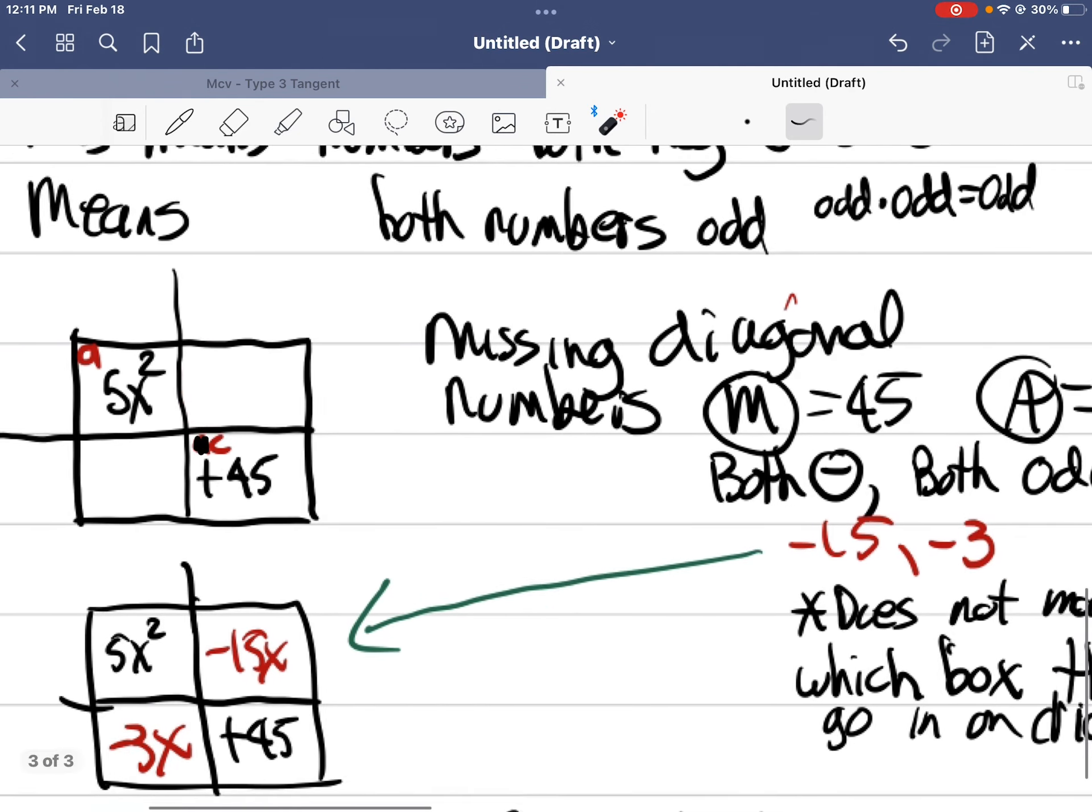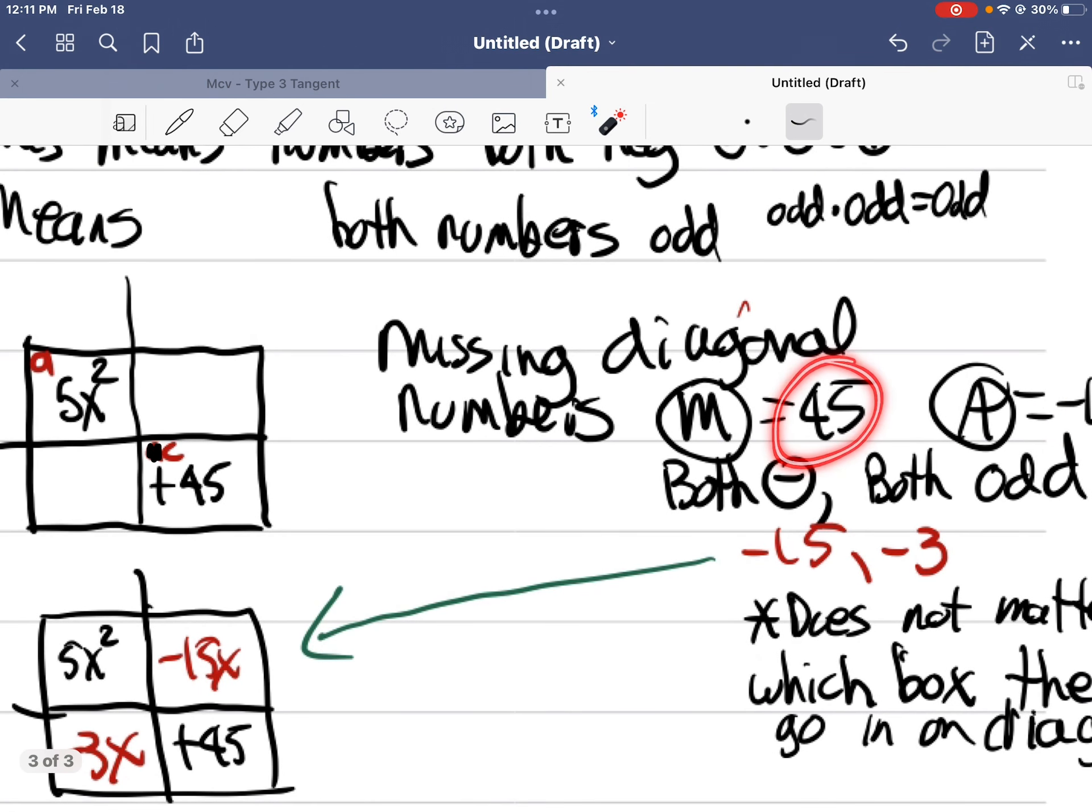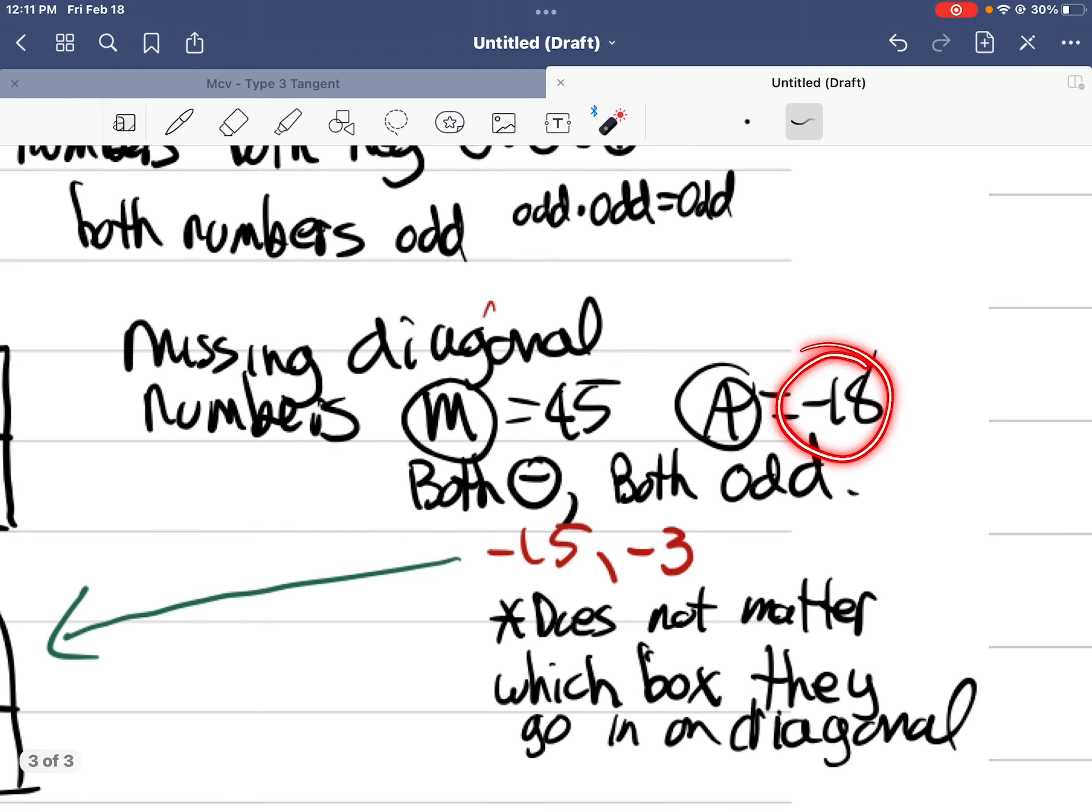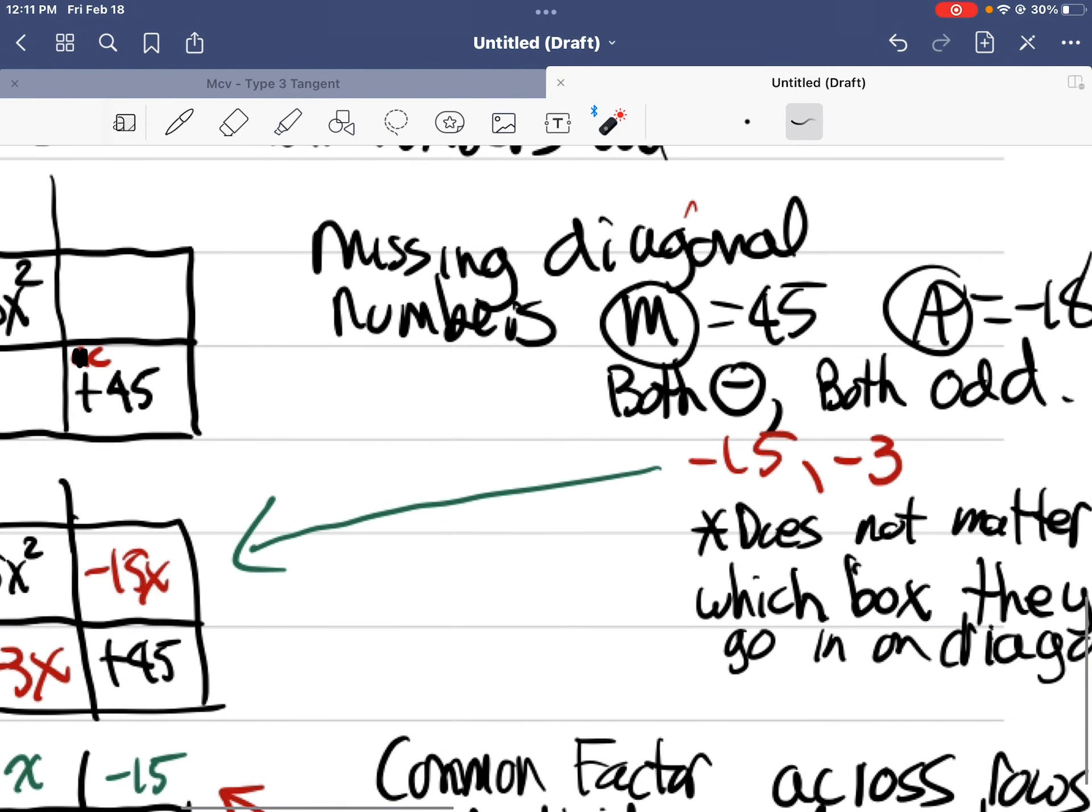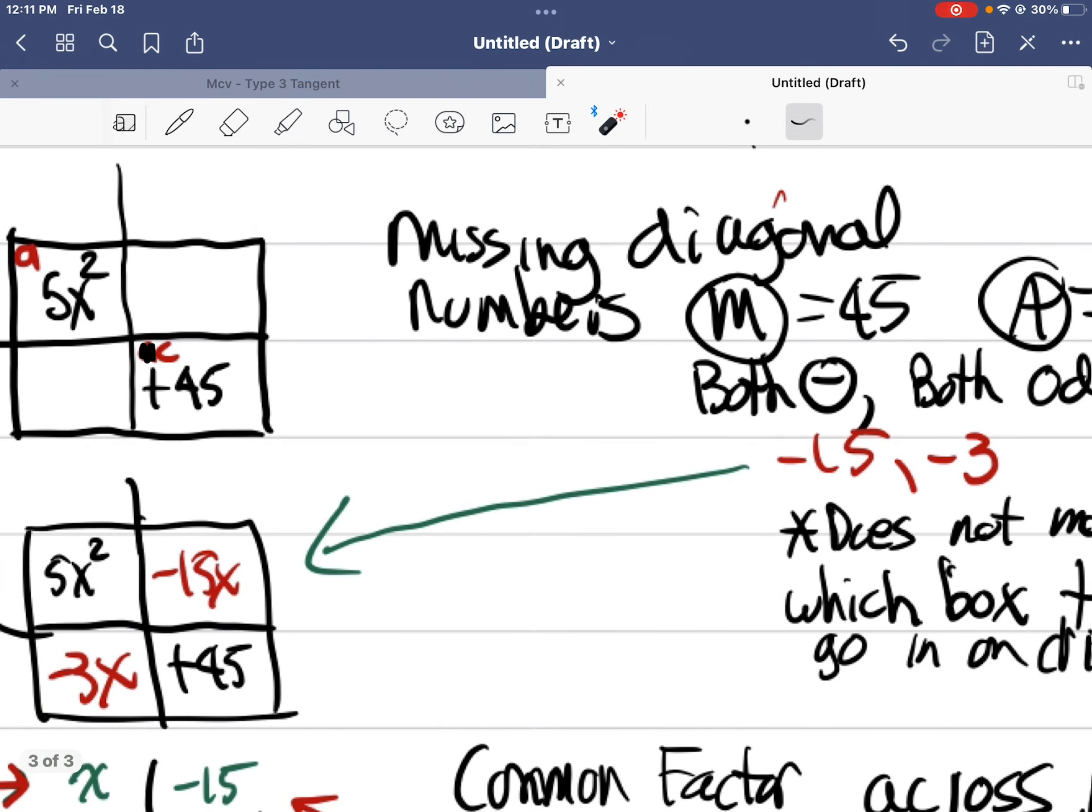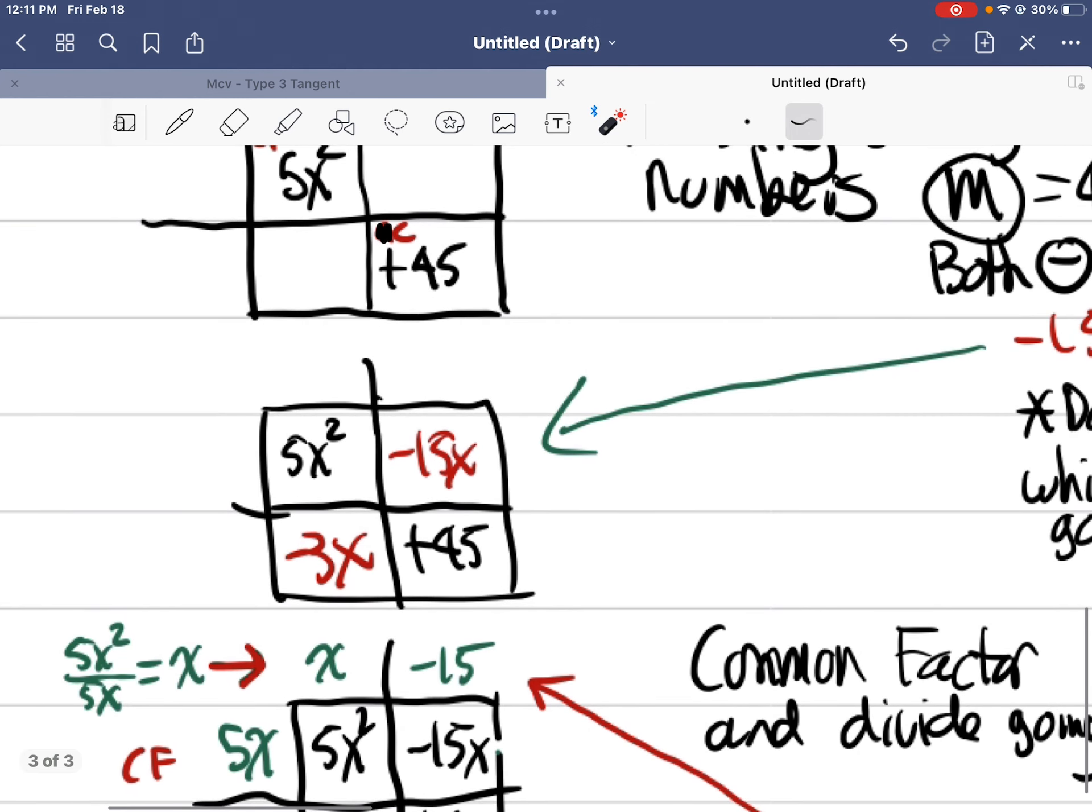Those are the two numbers that multiply to 45 and add to negative 18. That tells us they're both odd. This tells us they're both negative because it multiplies to a positive as well. Okay. So if I go through my multiplication chart or times tables or whatever, use my calculator repeatedly, it works out that the two numbers are negative 15 and negative three, both odd, both negative. What do I do with those? Well, I complete the grid. I filled out the inside of the grid. Now it does not matter where I put them. I could put the negative three X there and the negative 15 X there. It just doesn't matter.